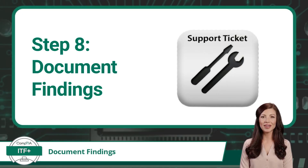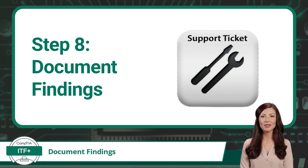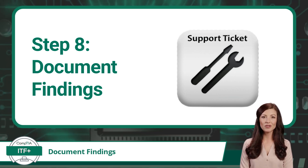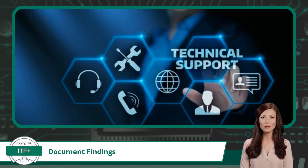The final and last step in CompTIA's troubleshooting process is to document your findings. Document the symptoms, document your actions, document your outcomes, and document any lessons learned. That way, when a problem is resolved, there is a complete record of everything that transpired during the entire troubleshooting process. This can be extremely helpful when providing any technical support in the future.